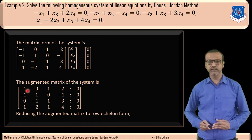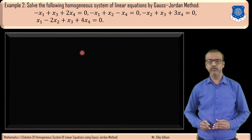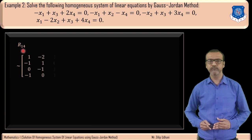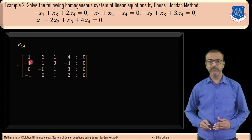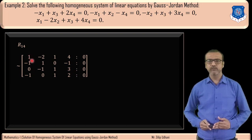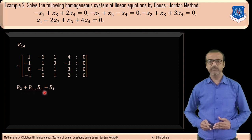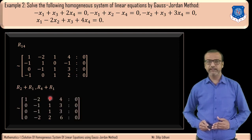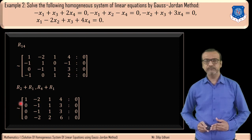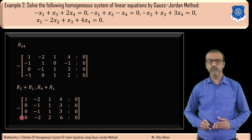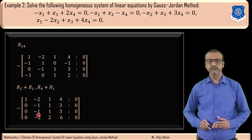We need a leading 1 at position (1,1), so we interchange row 1 and row 4 using operation R14. Then we make -1, 0, and -1 below the leading 1 equal to zero by applying R2 + R1 and R4 + R1. Row 1 becomes [1, -2, 1, 4 | 0]; row 2: [0, -1, 1, 3 | 0]; row 3: [0, -1, 1, 3 | 0]; row 4: [0, -2, 2, 6 | 0].